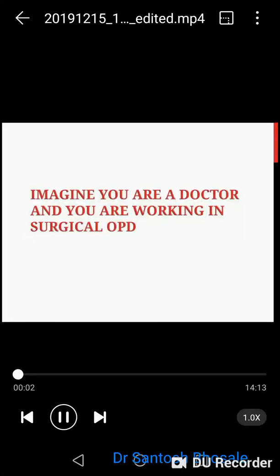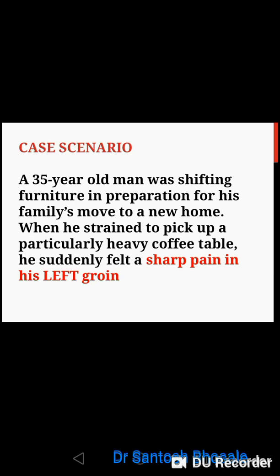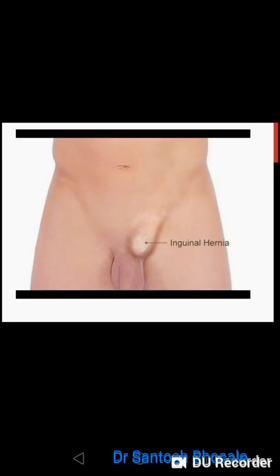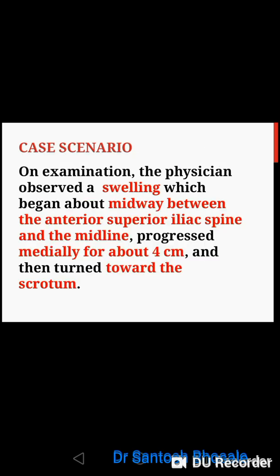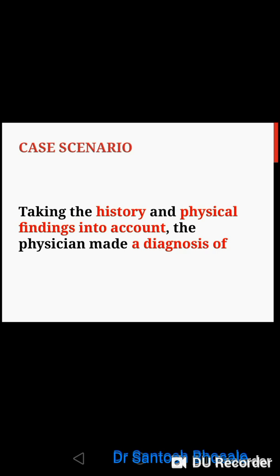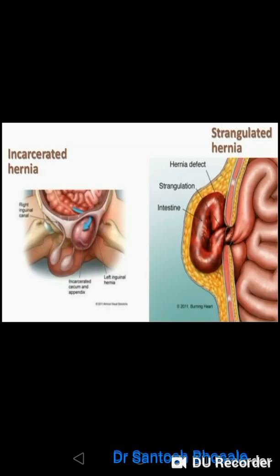Today we will first take a case scenario, then go for the anatomy of the concerned region. A 35-year-old male felt sharp pain in the left groin while lifting a heavy object. He later noticed that the swelling disappeared when he lay on his back. The condition recurred with more size and more pain. The doctor observed swelling midway between the anterior superior iliac spine and the pubic symphysis. The diagnosis is a clear case of inguinal hernia. Among all abdominal hernias, inguinal hernias are very common and may be irreducible, strangulated, incarcerated, or sometimes congenital.